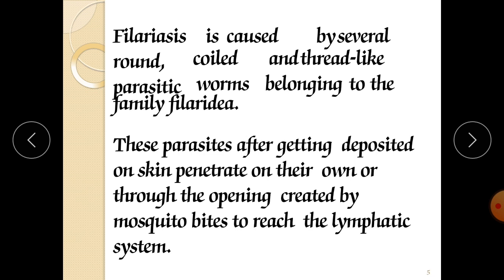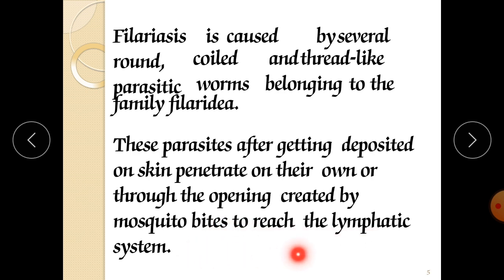Filariasis is caused by several round, coiled, and thread-like parasites belonging to the family Filariidae. These parasites, after getting deposited on skin, penetrate on their own or through the opening created by mosquito bites. Mosquito bites produce openings through which these parasites penetrate and get inside the body to reach the lymphatic system, targeting lymph nodes, which are mostly found in your leg or arm area.